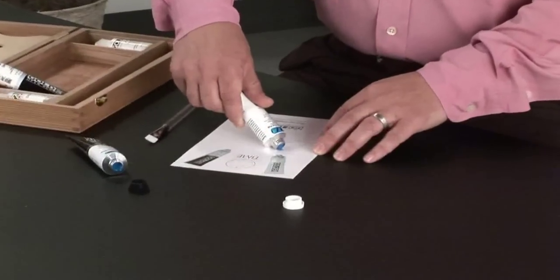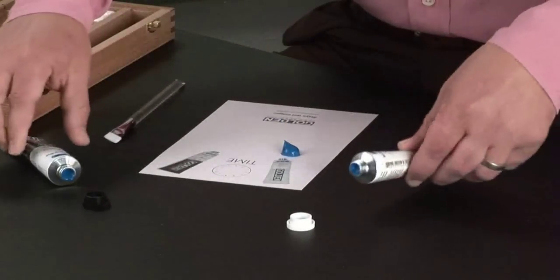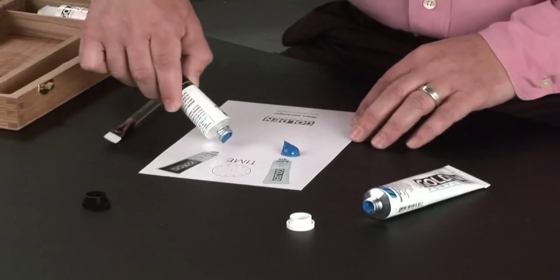We'll start by laying out a small amount of heavy body paint on one side of our card and then a small amount of open acrylic on the other side.